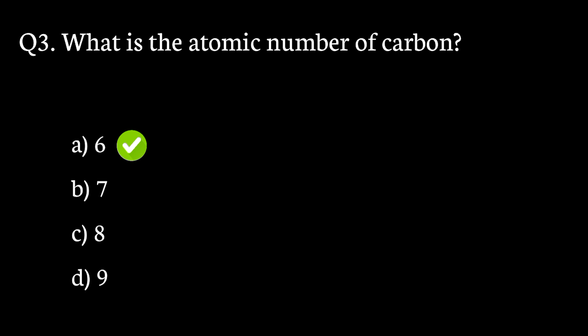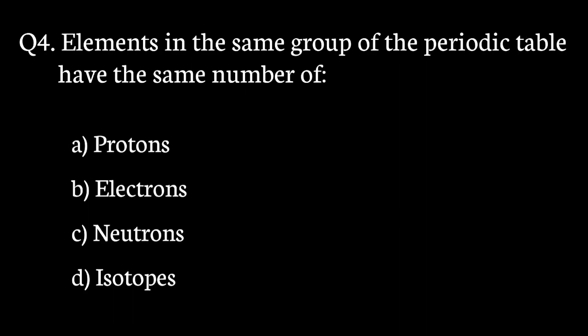Question number 4. Elements in the same group of the periodic table have the same number of — the correct answer to that question is option B. Electrons.